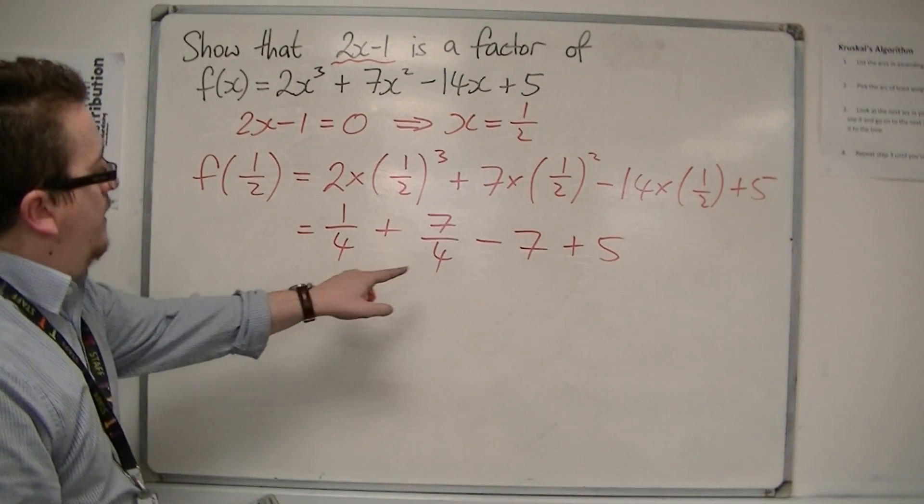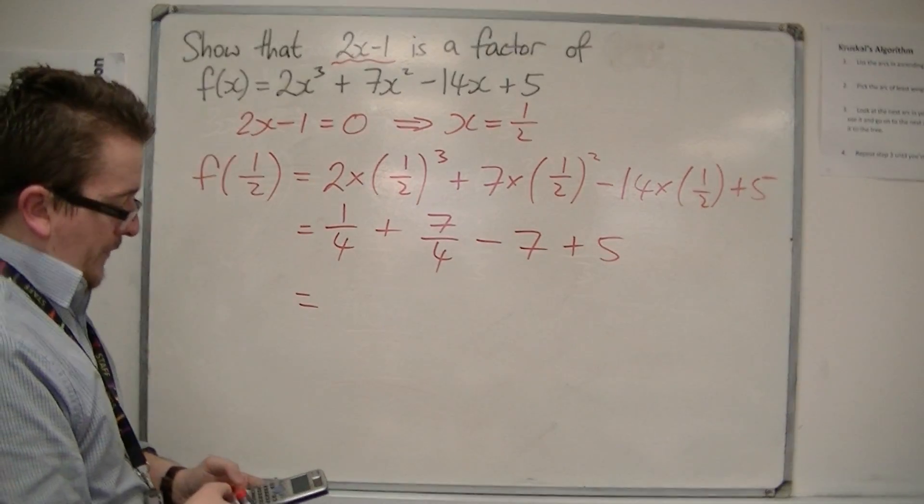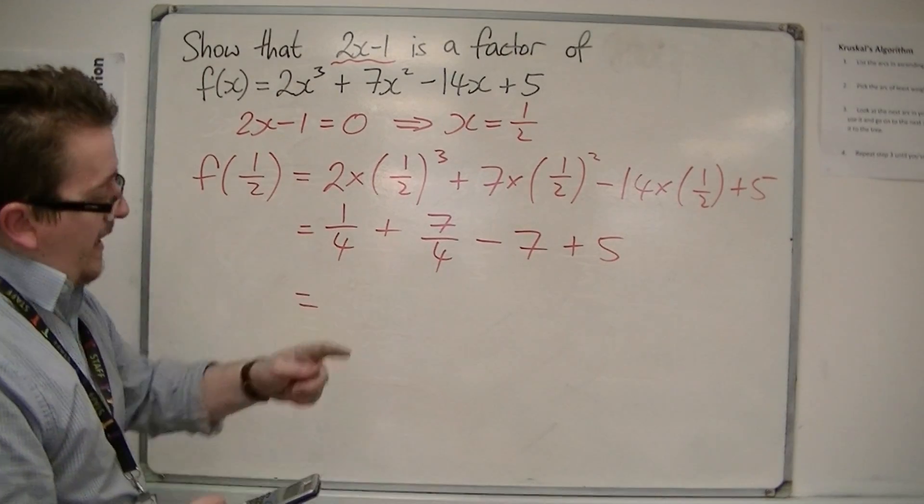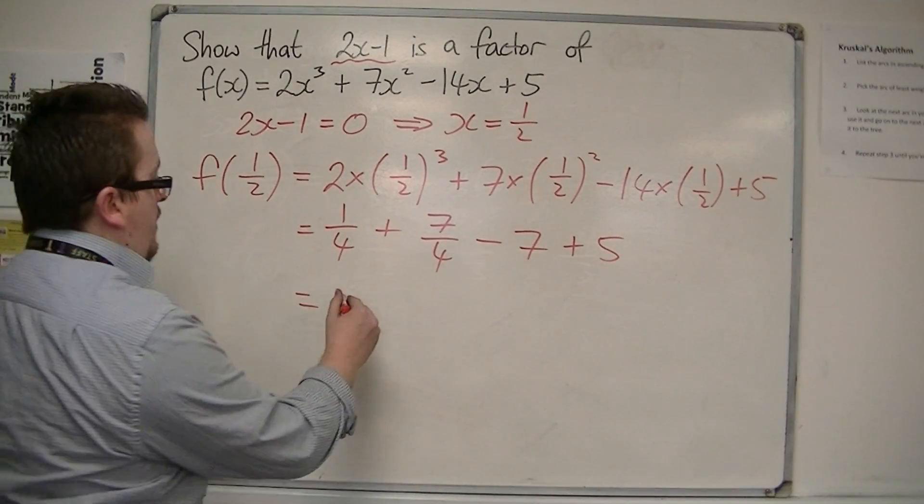So we have 1/4 plus 7/4, which is 2, minus 7, plus 5 equals 0.